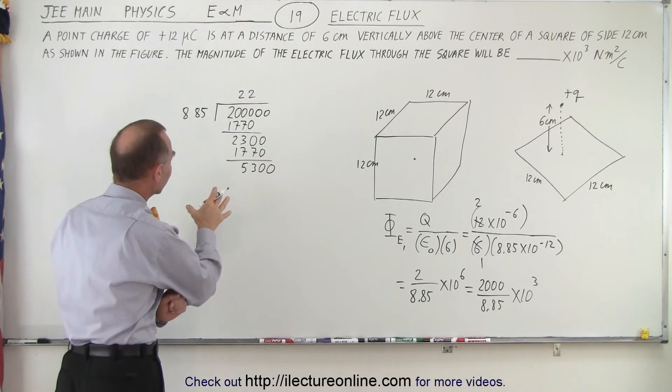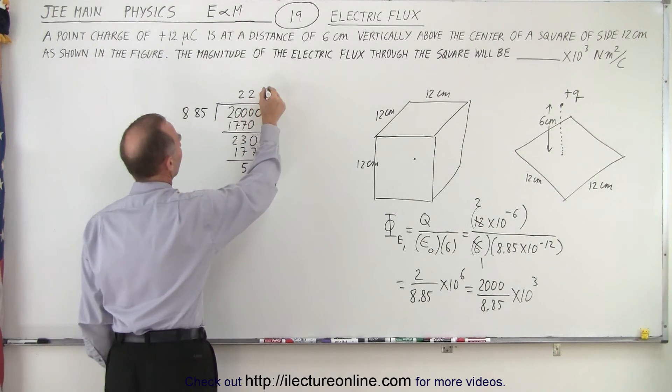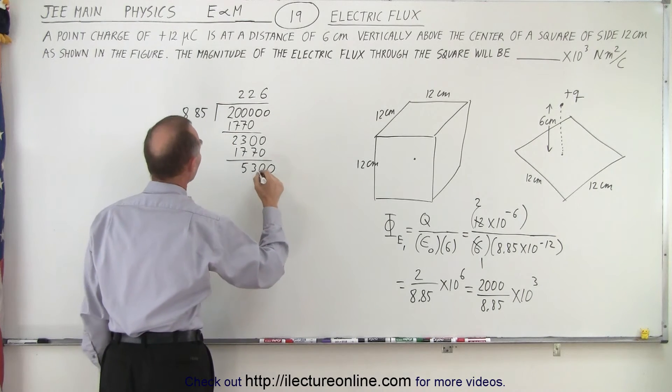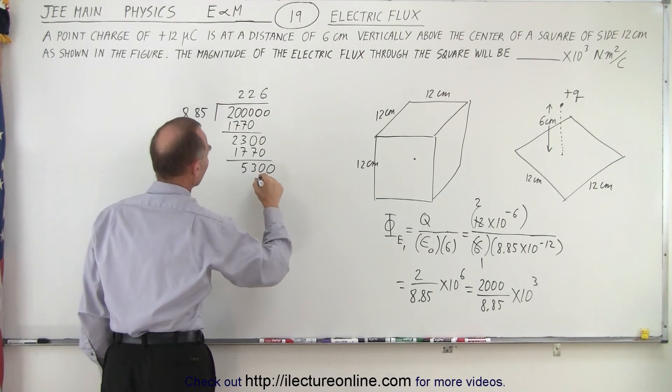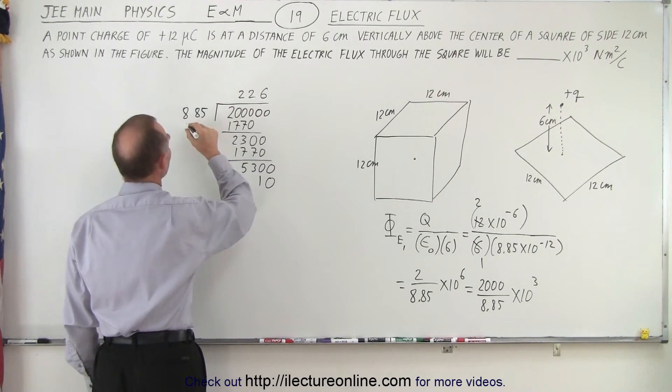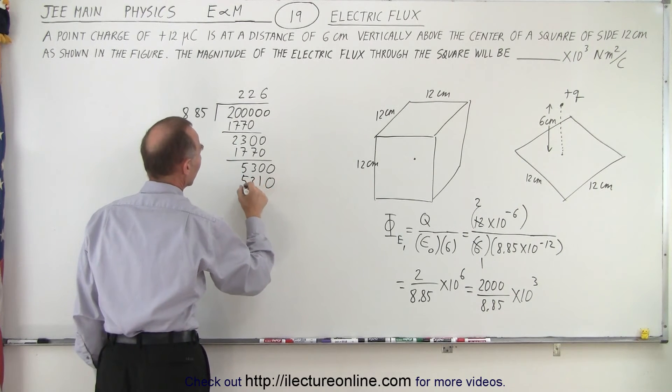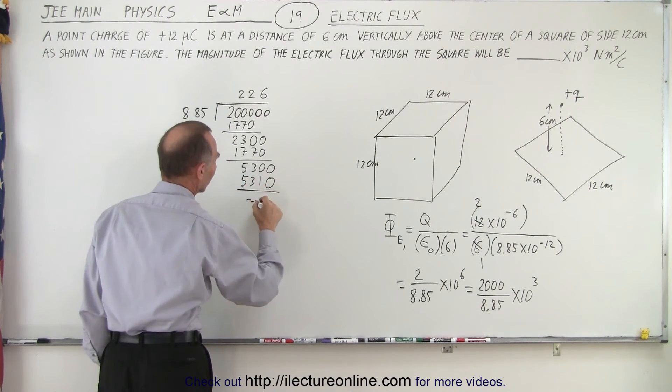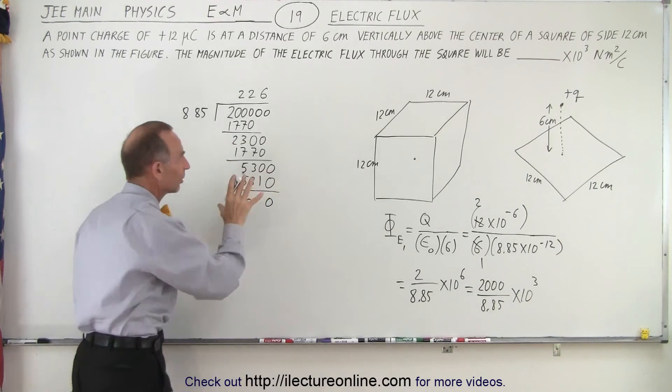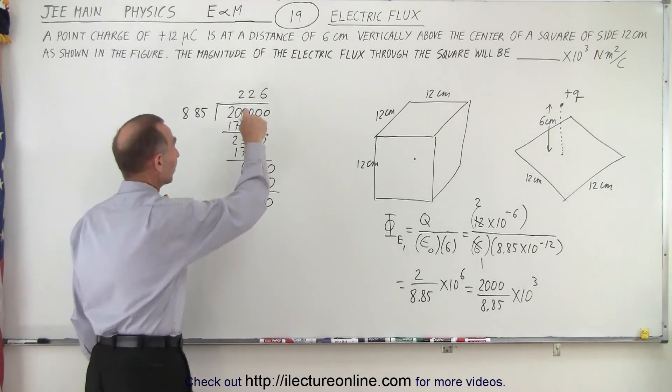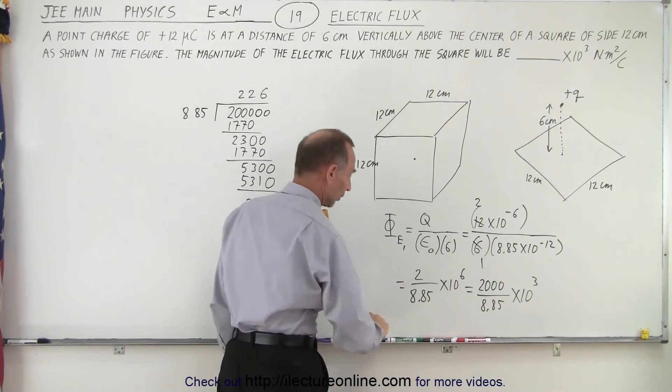And 8.85 goes into that 5, 5 times, maybe 6 times. Let's try 6. 6 times that would be 0, 3, 48, that's 1, 5. 6 times 8 is 48 of 53. And wow, really close. So the remainder is approximately 0. Close enough. And so that means that 226 is what goes in here.